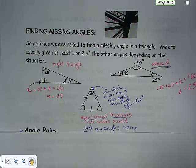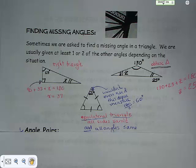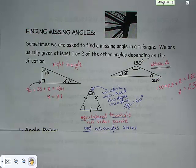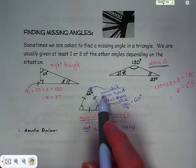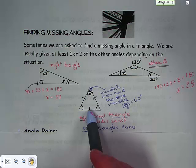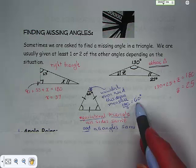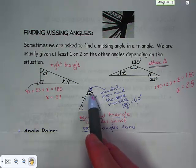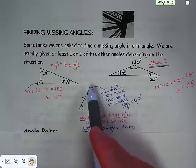Here in the middle is an equilateral triangle. Equilateral triangles are special — they have three sides that are the same, and therefore three angles that are the same. Since we share 180 degrees among three equal angles, 180 divided by 3 is 60. So even without being given the measure, we would know all three angles are 60 degrees.